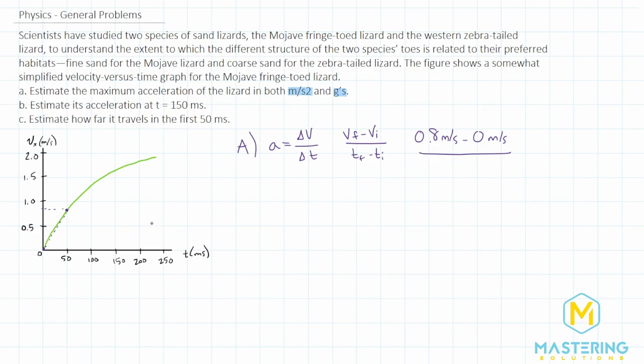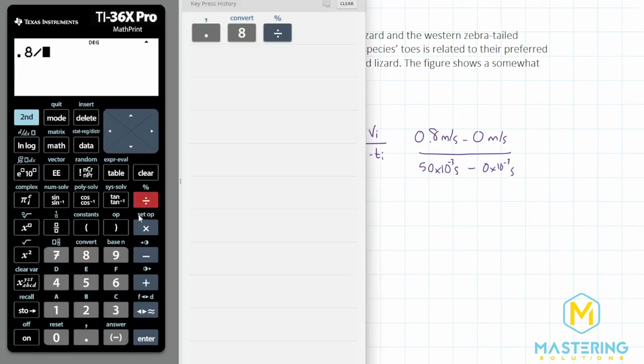We'll divide that by the times, which we have milliseconds, but we want standard units of seconds so that we will get the correct units output. So we have 50 milliseconds, but 50 is another way of saying it 10 times the negative three seconds minus zero times 10 to the negative three seconds. So 0.8 divided by 50 times 10 to the negative three.